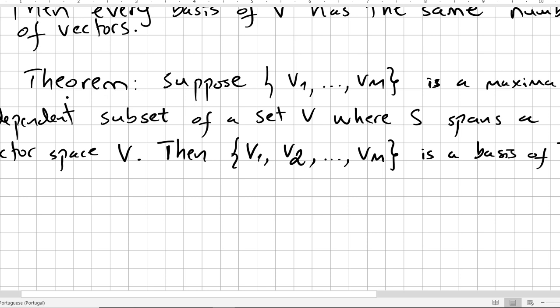Another theorem connected with both theorems is this one. Suppose you have this set v1, v2, v3, up to vm, and this set is a maximum independent subset of a set—sorry, this shouldn't be V. This should be S. So suppose v1, v2, up to vm is a maximum independent subset of a set S.